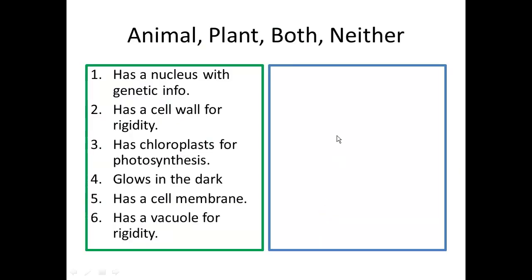Now, on your own, you need to look at these six sentences and decide whether each one is related to an animal cell, a plant cell, both, or neither. Pause the video and take your time to complete the task.